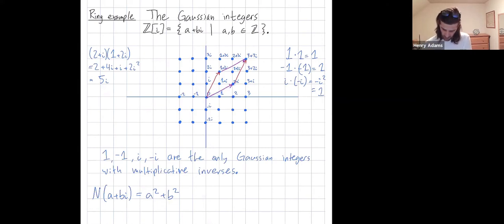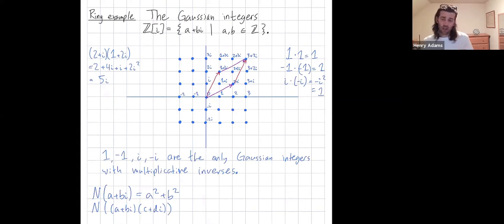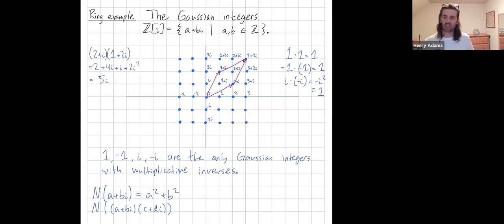The way complex multiplication works, if I have two Gaussian integers a plus bi and c plus di and multiply them together, the norm of the product equals the product of the norms. That is, N((a+bi)(c+di)) = N(a+bi) · N(c+di). Let's quickly show why this is true.